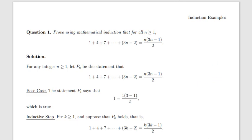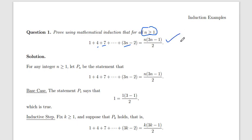In the last lecture we solved three problems and one problem was given as homework. In this lecture we will study different types of problems and how to solve them using mathematical induction — problems that are somewhat more difficult than the previous lecture. Let's start: prove using mathematical induction that for all n greater than or equal to 1, 1 + 4 + 7 + ... + (3n − 2) = n(3n − 1) / 2.